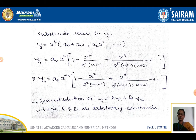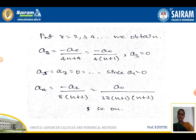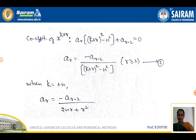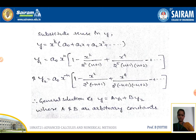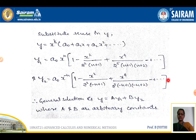Substituting all these values into y = x^k·(a0 + a1·x + a2·x² + ...) with k = n, we get y1 = a0·x^n·[1 − x²/(4(n+1)) + x⁴/(32(n+1)(n+2)) − ...]. Similarly y2 is obtained with k = −n. The general solution is y = a·y1 + b·y2, where a and b are arbitrary constants.